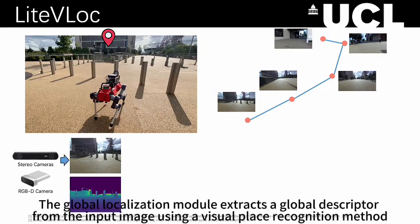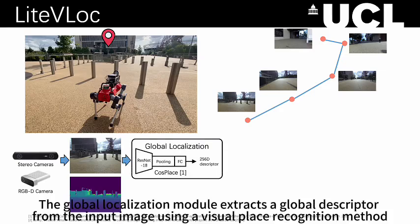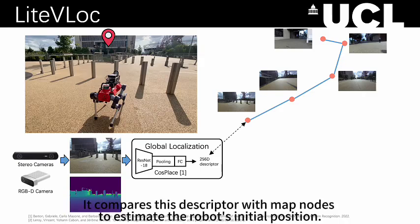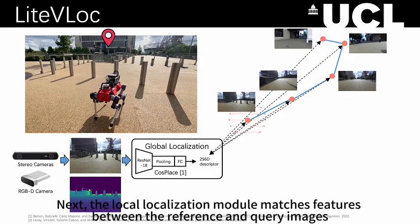The global localization module extracts a global descriptor from the input image using a visual place recognition method. It compares this descriptor with map nodes to estimate the robot's initial position.